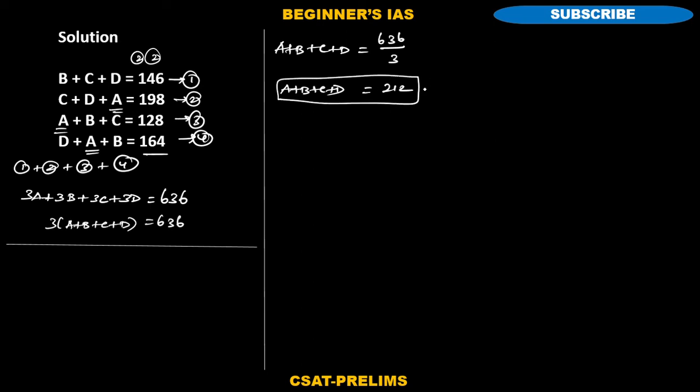To find A, B, C, we need to solve the equations. To find A, what you need to do is a simple thing. Equation number 5 minus 1, which means B, C, D will be eliminated on the LHS. The remaining would be A. What is the corresponding RHS? 212 minus 146. After doing this subtraction you will get A is equal to 66.